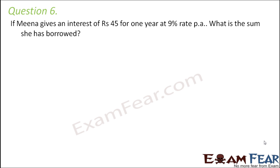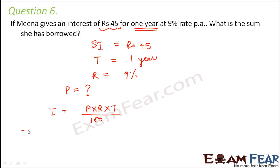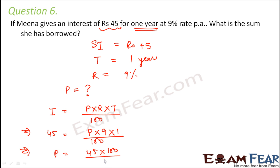Question number 6: if Mina gives an interest of rupees 45 for one year at 9% rate per annum, what is the sum she has borrowed? Simple interest is rupees 45, time is one year, and rate of interest is 9%. We have to calculate the principal. So 45 equals P into 9 into 1 divided by 100. Therefore P equals 45 into 100 divided by 9, which equals rupees 500. So the money she has borrowed was rupees 500.